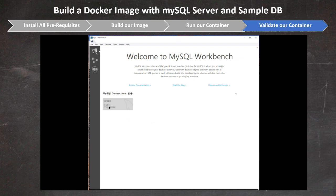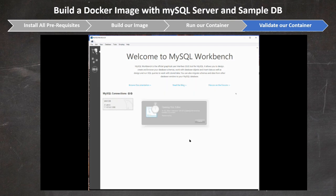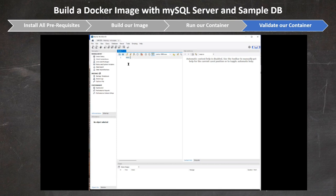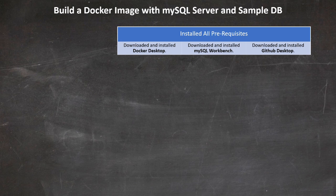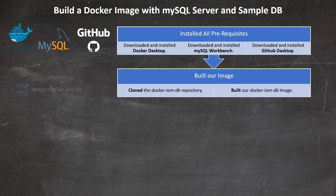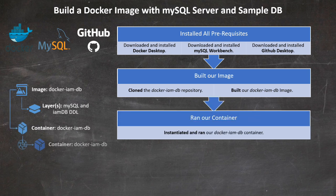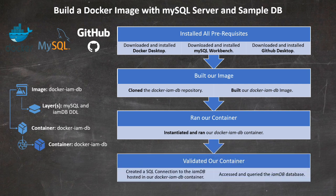Enter the admin password defined in the .env file. Once connected, you can query the database and see all the tables of our IAMDB database. To recap what we've done in less than five minutes: you installed all three prerequisites, cloned the Docker IMDB repo and built the image with its two layers, instantiated and ran the container, and validated that you could connect and query the IAMDB database hosted in your running container.